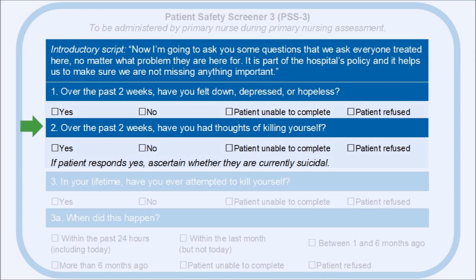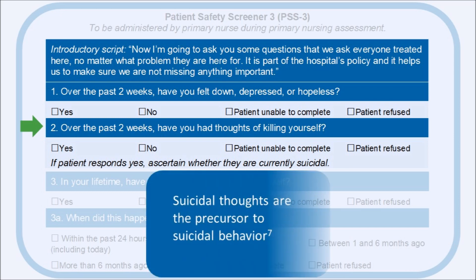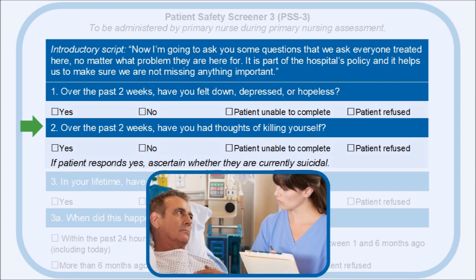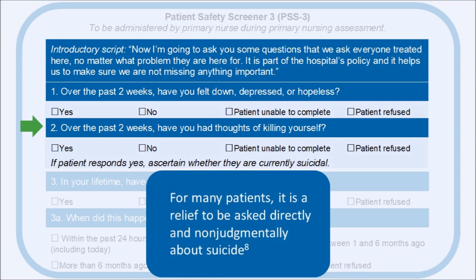Question 2 helps determine whether a patient has been having thoughts about killing themselves. Suicidal thoughts are the precursor to suicidal behavior since suicide does not occur without first having the idea or thought of wanting to end one's life. It is important to ask this question exactly as it is worded: "Over the past two weeks, have you had thoughts of killing yourself?" Although "killing" may seem harsh and difficult to say, it is important to ask it this way to find out if the person has active suicidal ideation, not passive or non-suicidal ideation. This sensitive question becomes easier to ask over time. Several trials have shown that asking patients if they are thinking about suicide will not give them the idea or increase their risk. For many patients at risk of suicide, it is a relief to be asked directly and non-judgmentally about suicide.